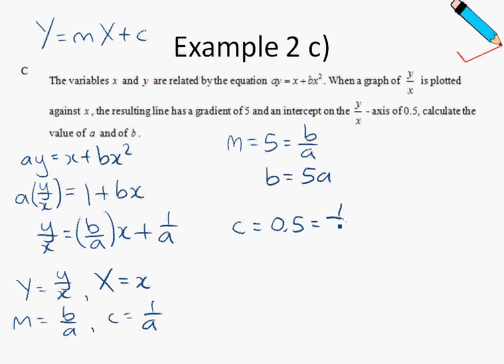So solving this, I will have a equals to 2. And then, subbing this back into b, so 5 times 2, b will be 10. So the conclusion over here is that a is 2 and b is 10.